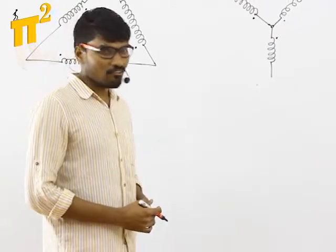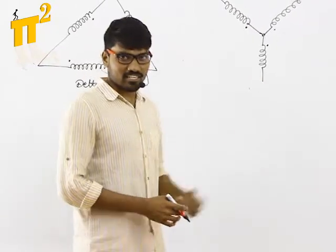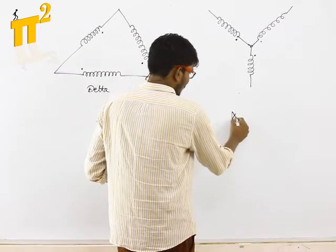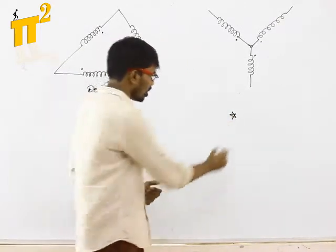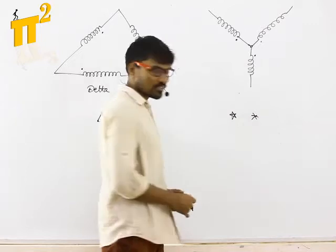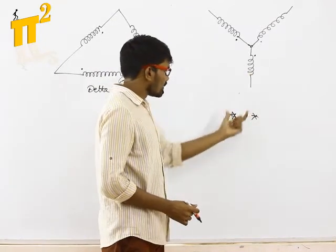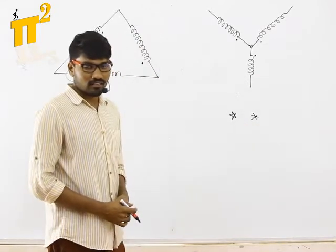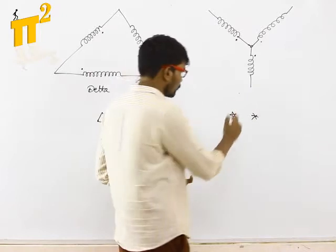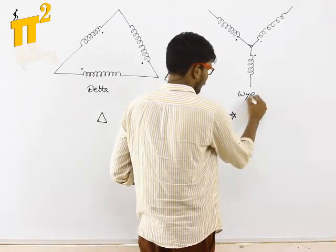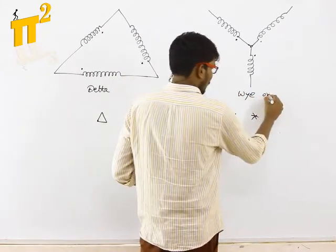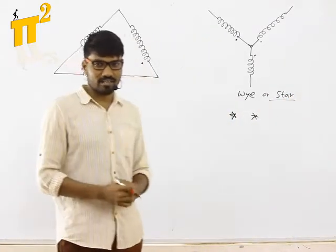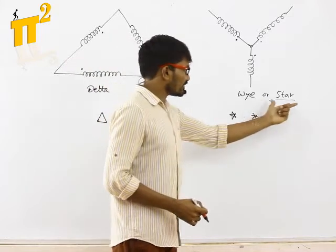Now the question is why this connection is called as star connection? Is it looking like a star? The shape of this is neither resembling a four-pointed star nor a five-pointed star. But still we call this as star connection — and of course we also call it as Y connection. There is a small factor behind this name.